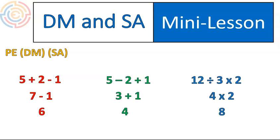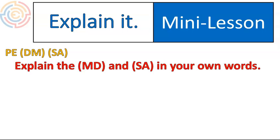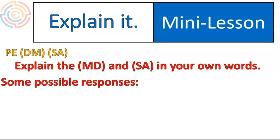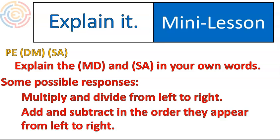Again, this is the most complicated step. What I'd like you to do is try to explain the multiplication/division or subtraction/addition step in your own words — say it out loud or write it down. You might have said: you multiply and divide from left to right; it doesn't matter if it's division first or multiplication first, you do whatever you come to starting at the left, going to the right. You might also have said: you add and subtract in the order they appear from left to right. That's absolutely correct.